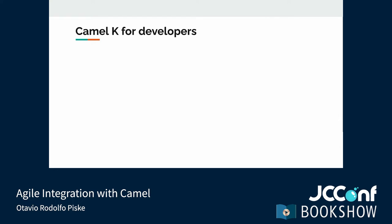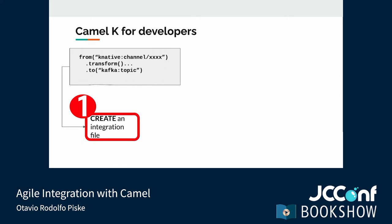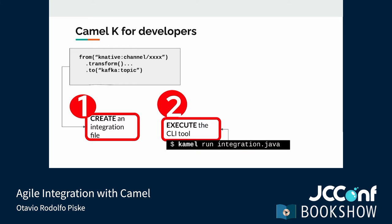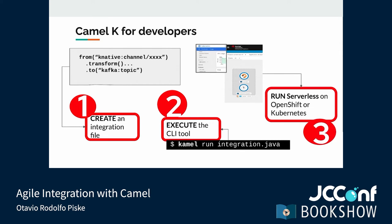There are three steps for running an integration with CamelK, and only two require action from the developer. First, create an integration file to describe the route — for example, using the Java DSL. Then use the CLI to send this integration to the operator running on the Kubernetes cluster. The operator takes care of everything else. You can use the CLI tool to watch the status and view the logs; if you're using live coding, watching the status and logs is done automatically.